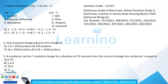Question 2: one coulomb charge is equal to how many electrons? Option A: 1.6×10¹⁹ protons. Option B: 10³ protons. Option C: 1.6×10¹⁸ protons. Option D: 6.24×10¹⁸ electrons. The correct answer is option D — 6.24×10¹⁸ electrons.